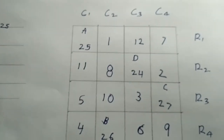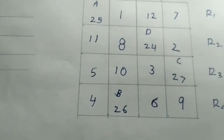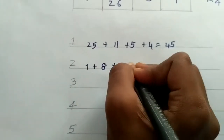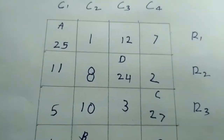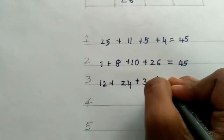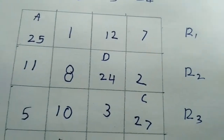Now our magic starts. The first column is equal to 25 plus 11 plus 5 plus 4, which equals 45. The second column is equal to 24 plus 8 plus 8 plus 10 plus 26, which equals 45. The third column is equal to 12 plus 24 plus 3 plus 6, which equals 45.